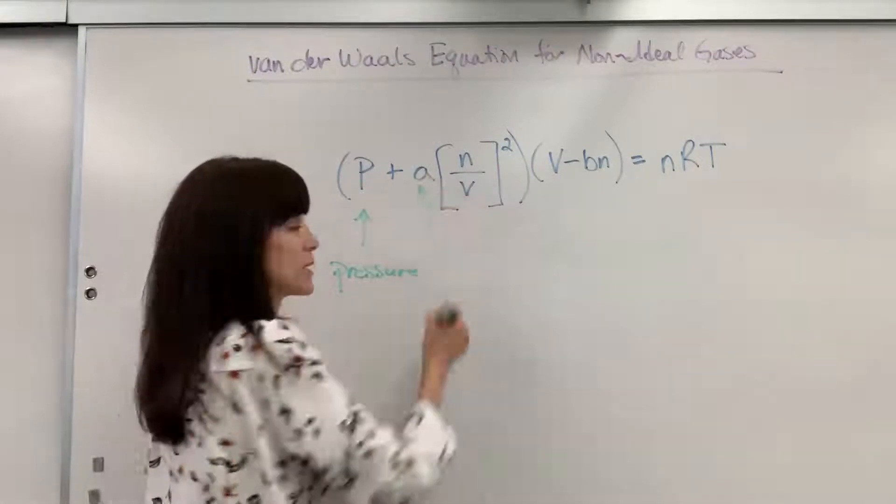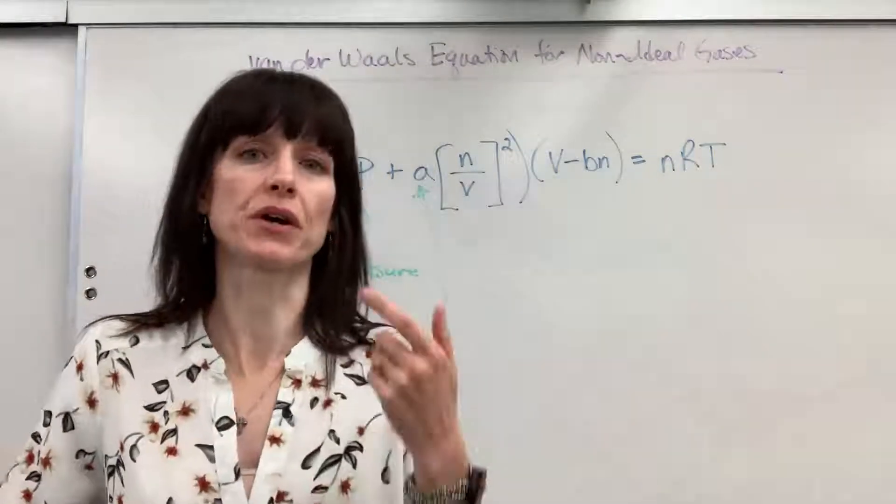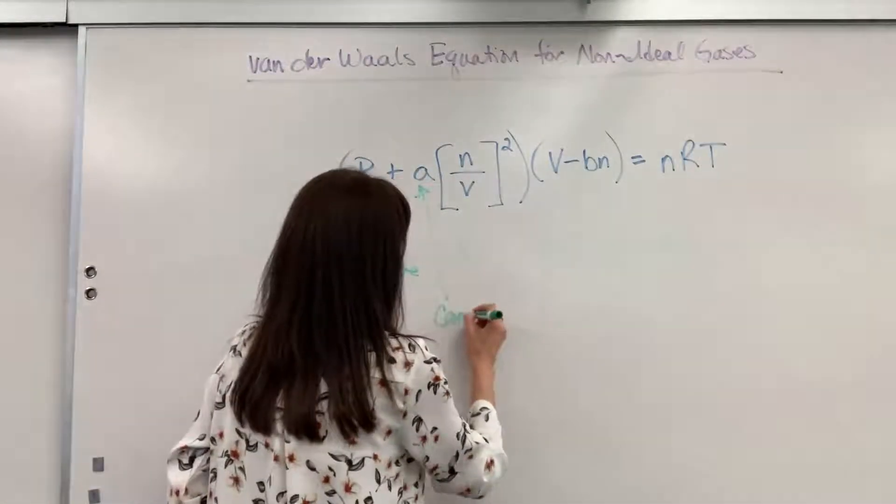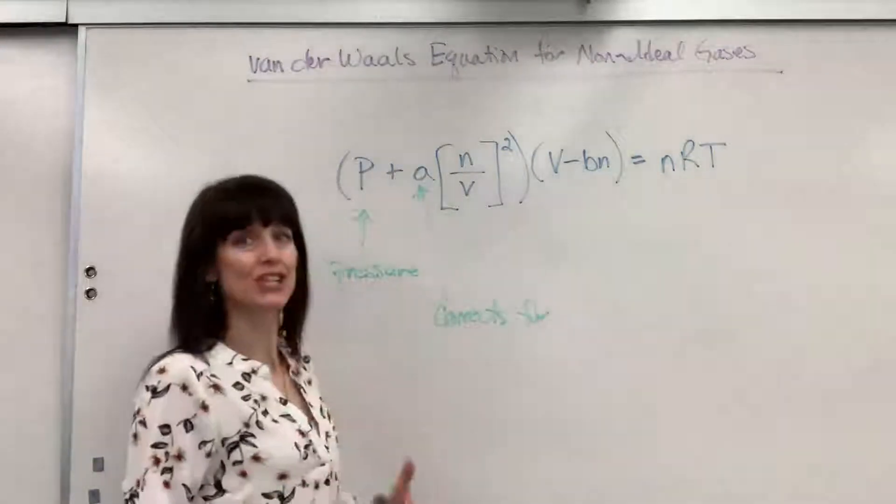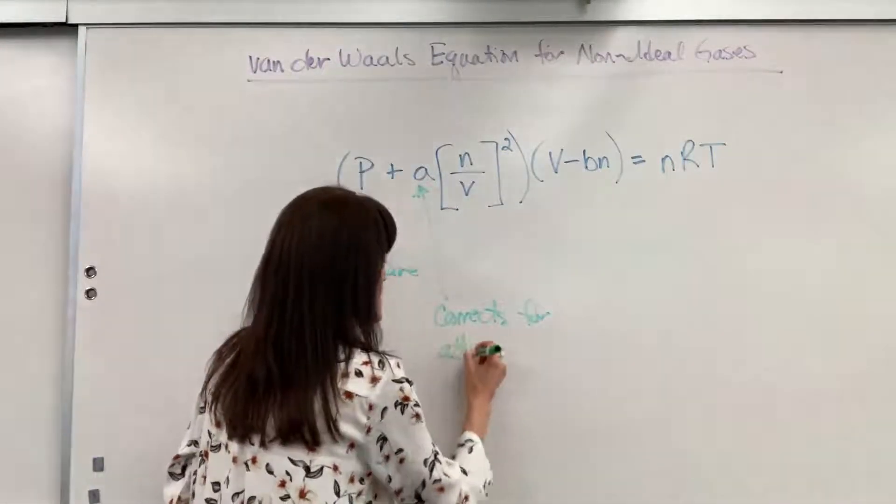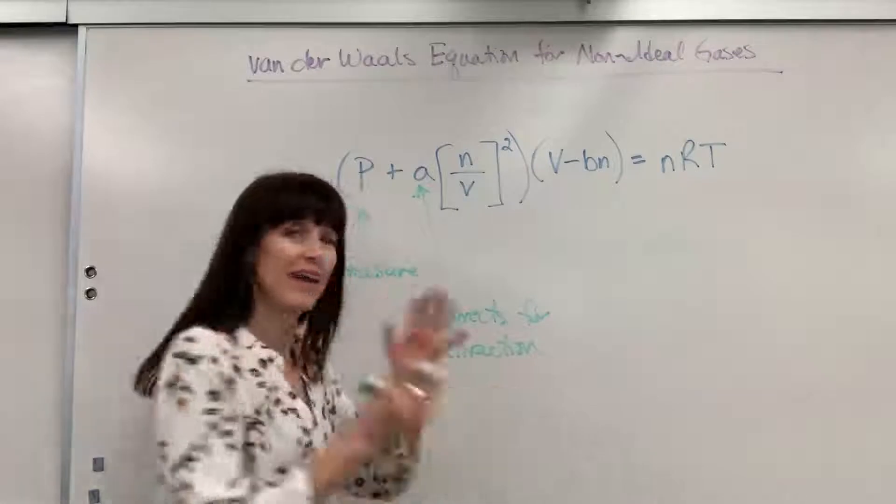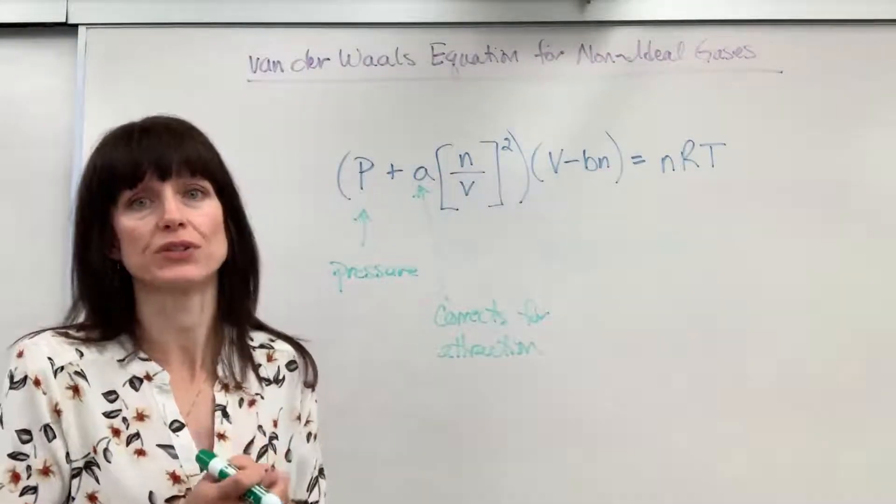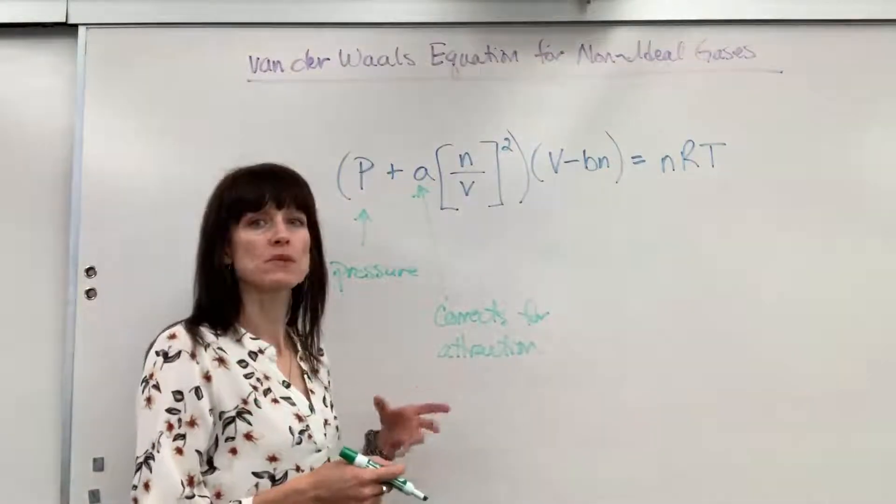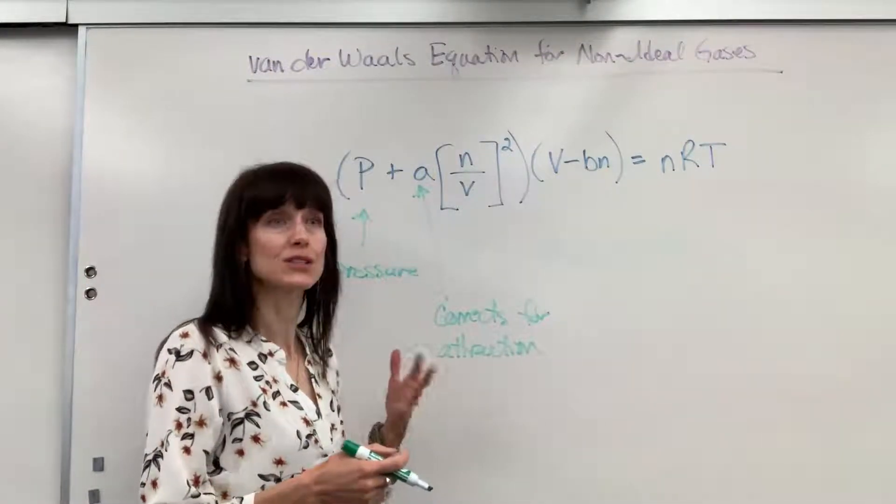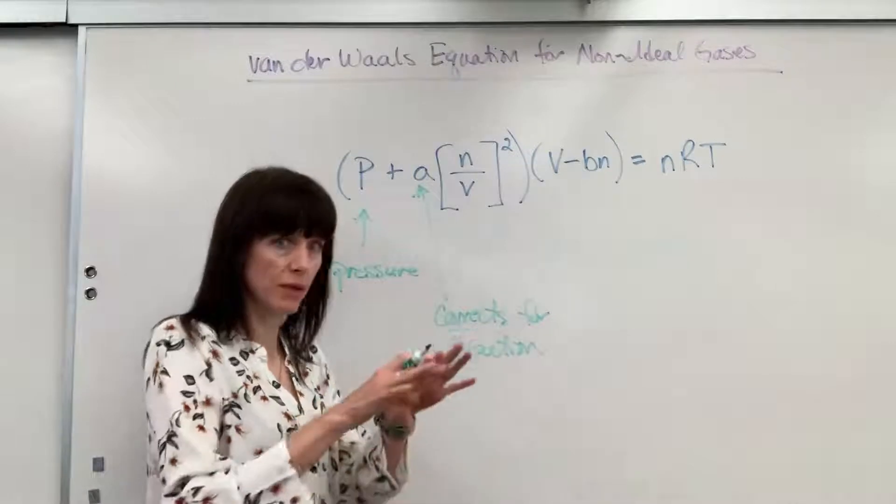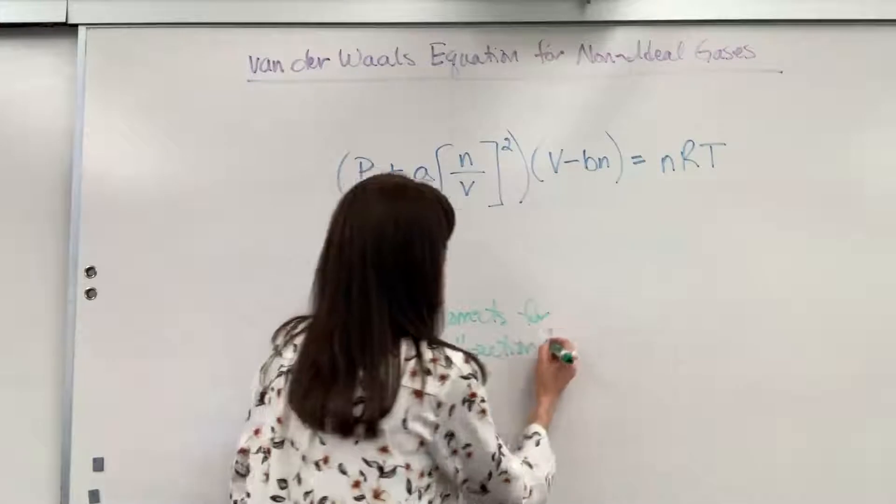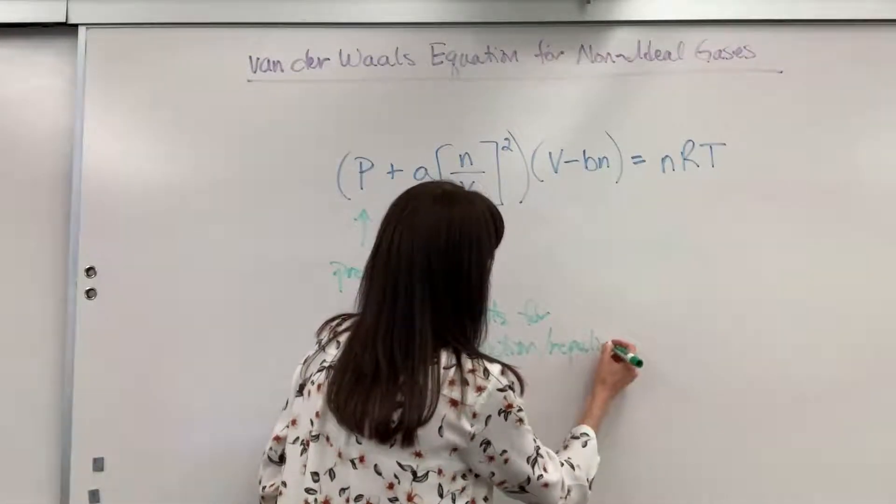Now A, this is special. This is what corrects for intermolecular forces. So this corrects for the attraction and repulsion. This takes care of the deviation of non-ideal behavior that there is attraction and repulsion with gas molecules. And remember that happens when we have really low temperatures, gas molecules slow down so they can attract and they can repel. So corrects for attraction and repulsion.